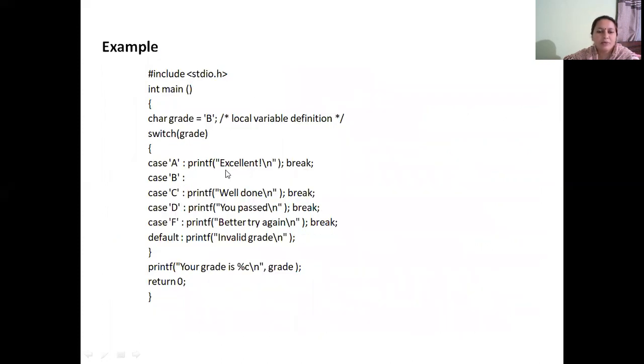This is an example program for making use of switch statement. I've taken a character variable grade and initialized it to B. This program is to check the grade value and display an appropriate message. If grade is A, we display message excellent. For B and C grades, well done is the message. For D grade, the message is you passed. For F, better try again.